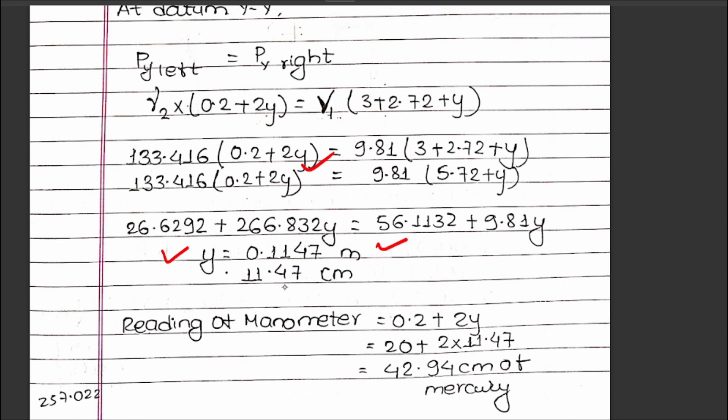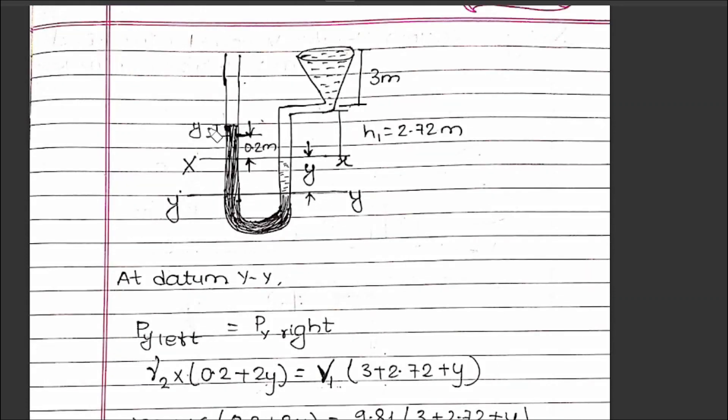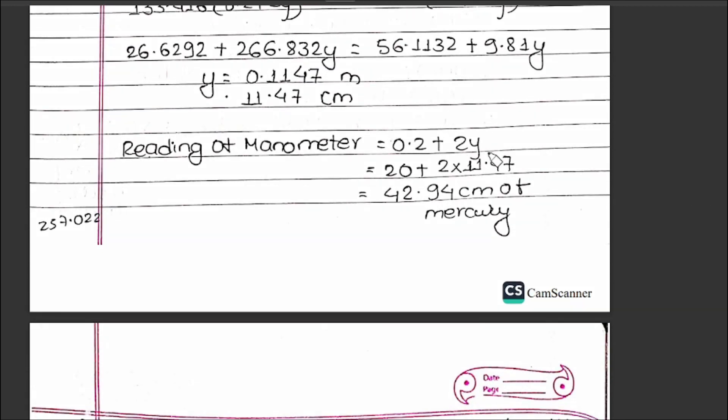The question asks for the reading of the manometer, which is h₂ = 0.2 + 2y. Therefore h₂ = 0.2 + 2(0.1147) = 0.4294 meters or 42.94 cm. This is the final answer.